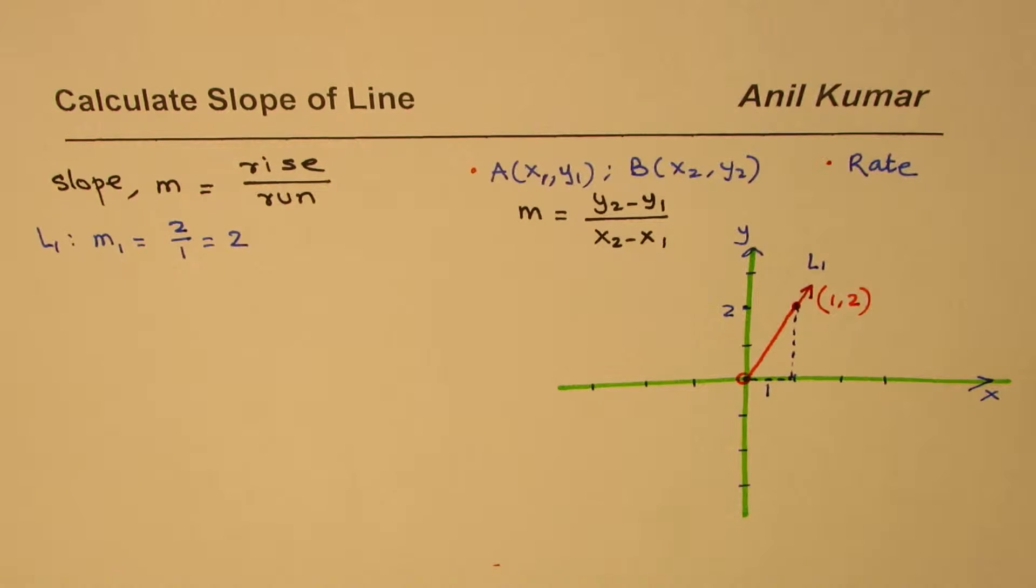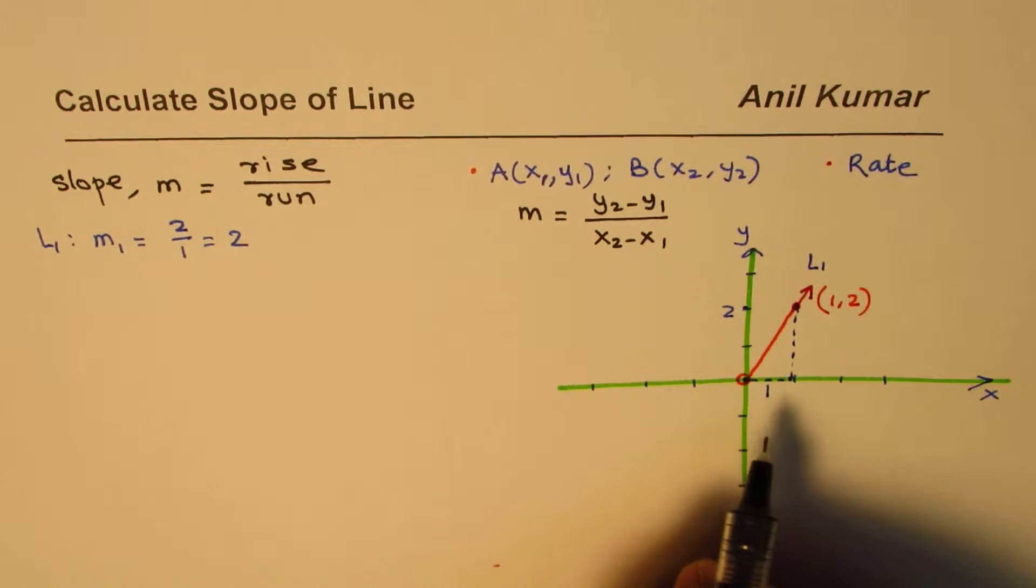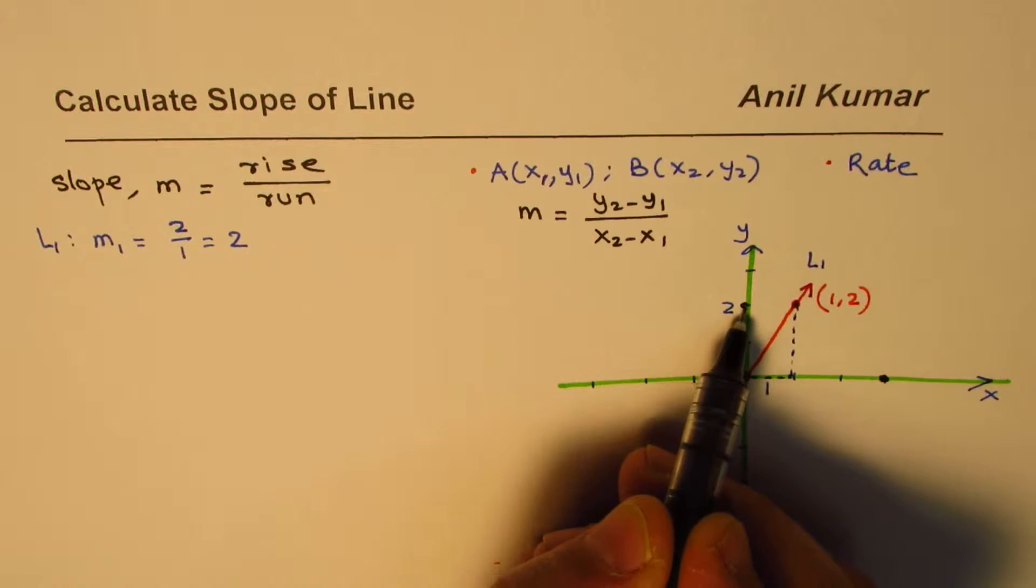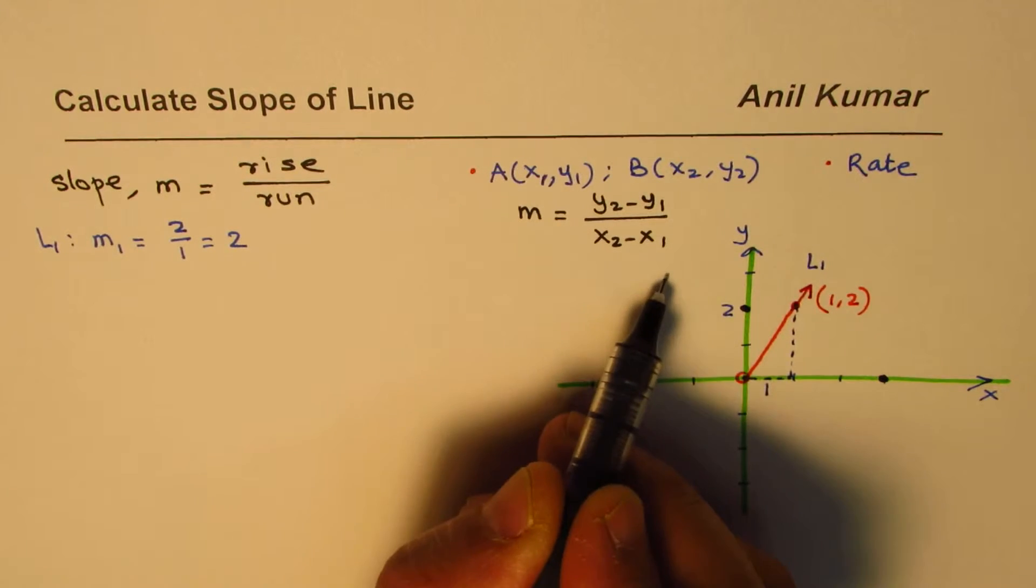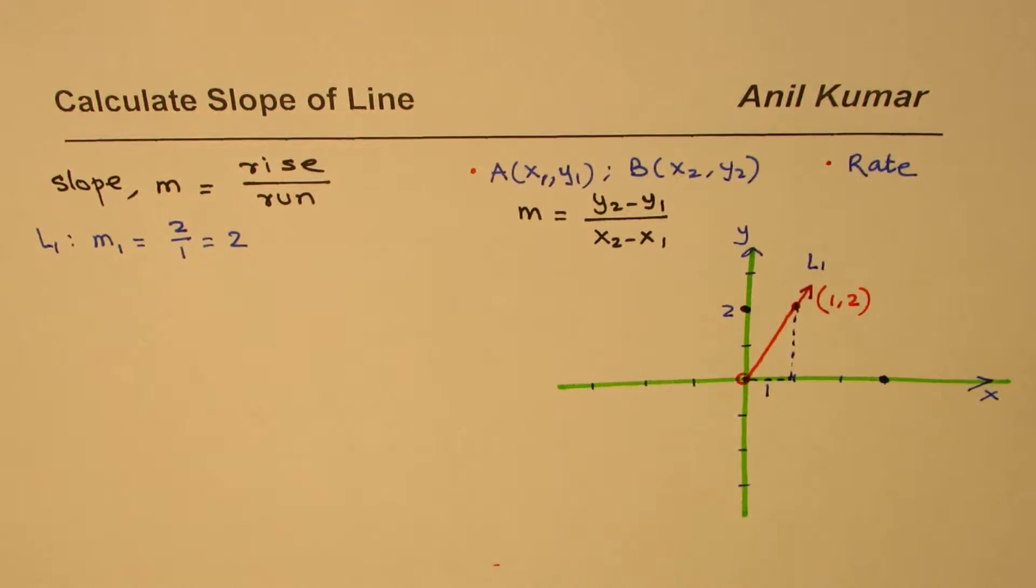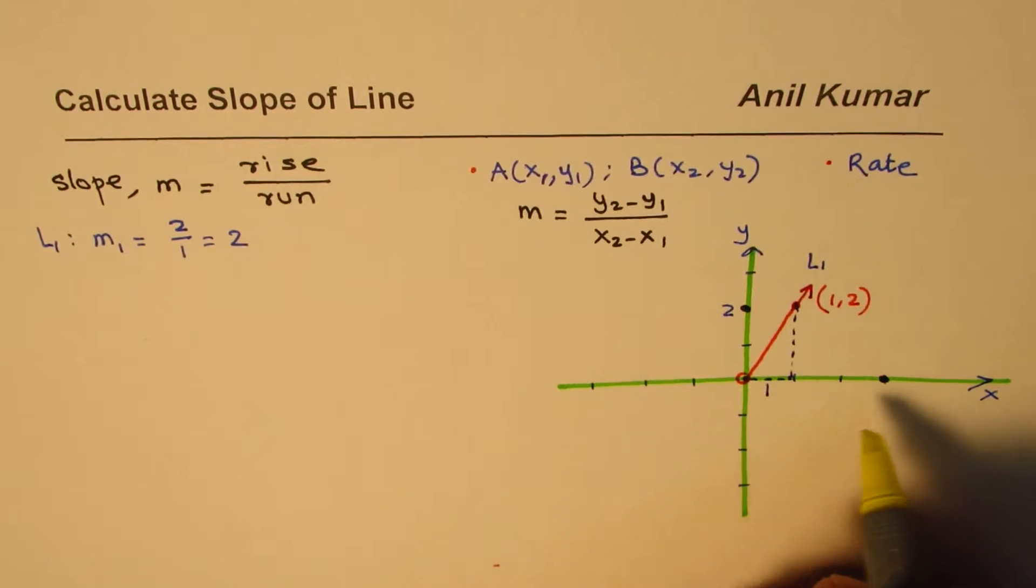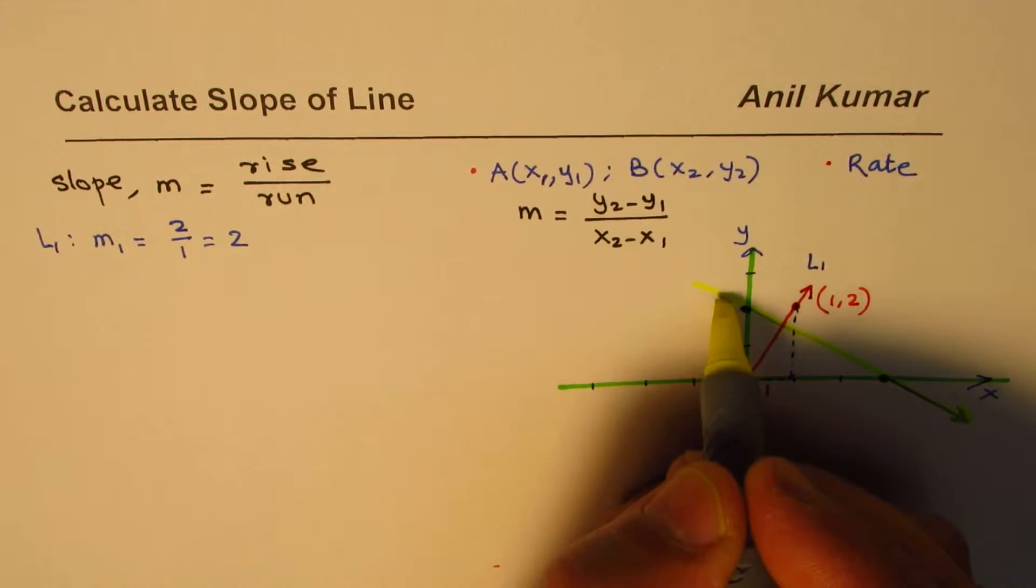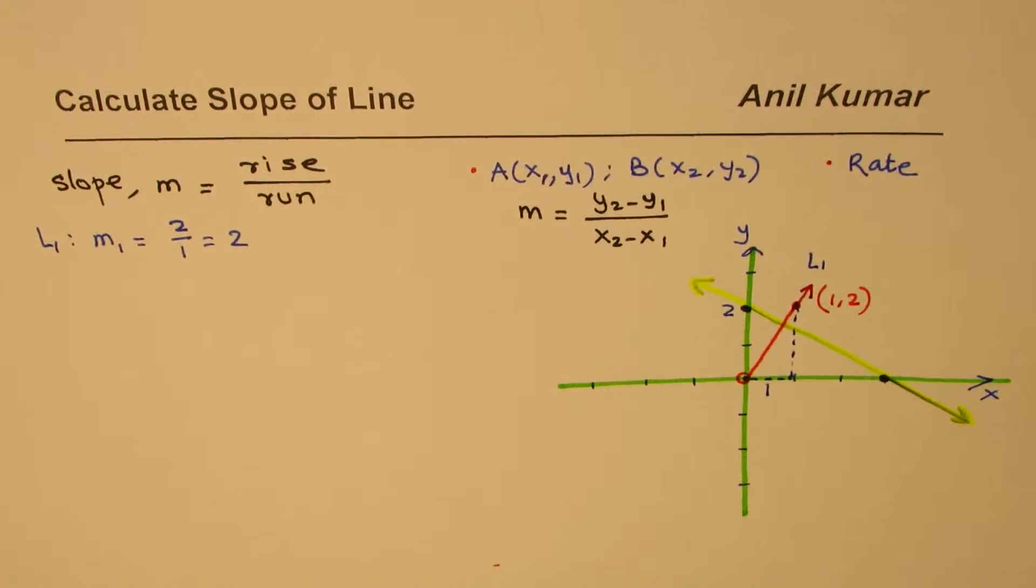Now let me consider another line. In this case, I will consider a line which has a negative slope. We will join these two points and draw a line. Let's use a different ink. I'm using a highlighter here, and that is the line. This is line 2.